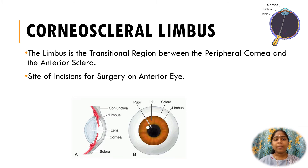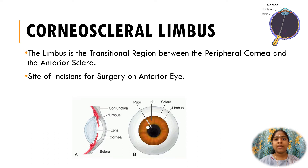Descemet's membrane terminates at the limbus and gives rise to the Schwalbe ring. This area contains the trabecular meshwork and the canal of Schlemm. The limbus also contains corneal stem cells located in the basal cell layer, and is the site of incision for surgery on the anterior eye.